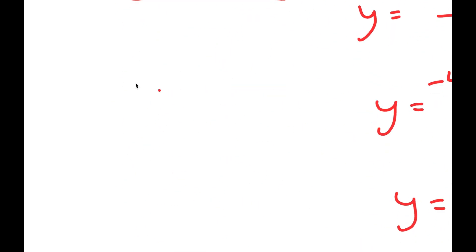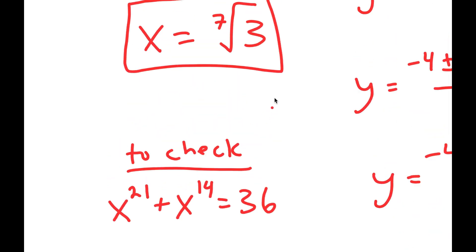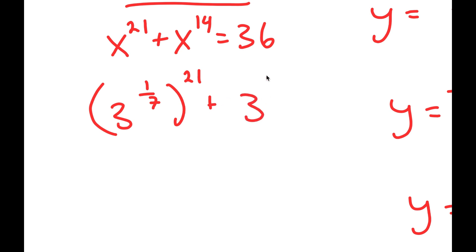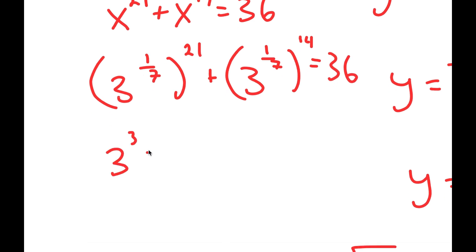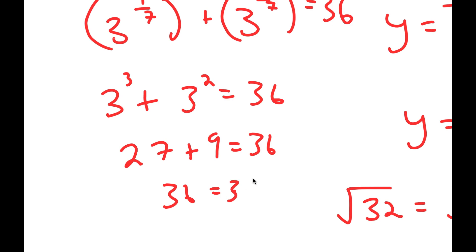Now to check: my equation was x to the power of 21 plus x to the power of 14 equals 36. The 7th root of 3 is the same as 3 to the power of 1 over 7. So 21 times 1 over 7 is 3, giving 3 to the power of 3, and 14 times 1 over 7 is 2, giving 3 to the power of 2. So 3 to the power of 3 is 27, and 3 to the power of 2 is 9, and 27 plus 9 gives 36 equals 36. Confirmed.